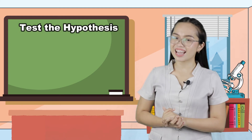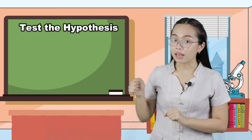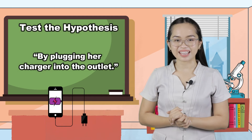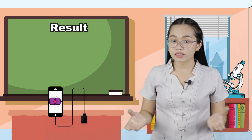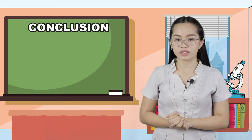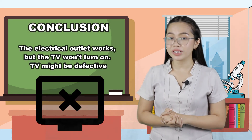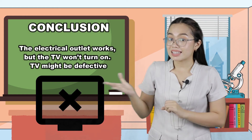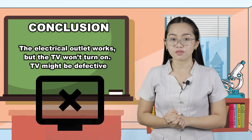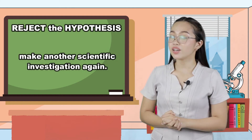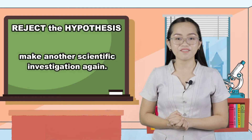It's time to test the hypothesis by plugging in her charger into the outlet. As a result, the charger works. Let us draw a conclusion: the electrical outlet works, but the TV wouldn't — the TV might be defective. So let's reject the hypothesis and make another scientific investigation again. Excellent, you did a good job!